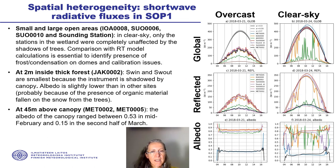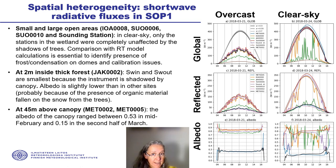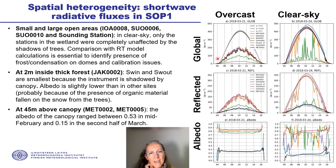Concerning radiative fluxes, there were six stations measuring shortwave radiative fluxes. They are illustrated here in this plot where we see global radiation, reflected radiation, and albedo in an overcast day on the left and in a clear sky day on the right. The plots also include radiative transfer calculations shown by the black and grey lines, simulating a clear sky diurnal cycle in both left and right plots. These calculations were done for reference to identify issues with the data.